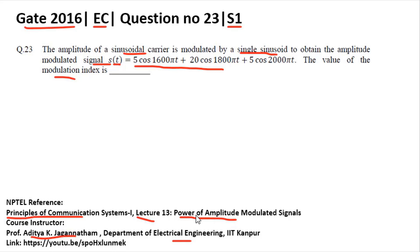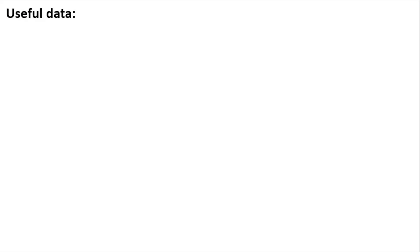The useful data for this question is: if you have given c(t), which is your carrier signal, which is represented by Ac cos 2π fc t, where fc is the carrier signal frequency and Ac is the amplitude of the carrier, and m(t) is equal to Am cos...